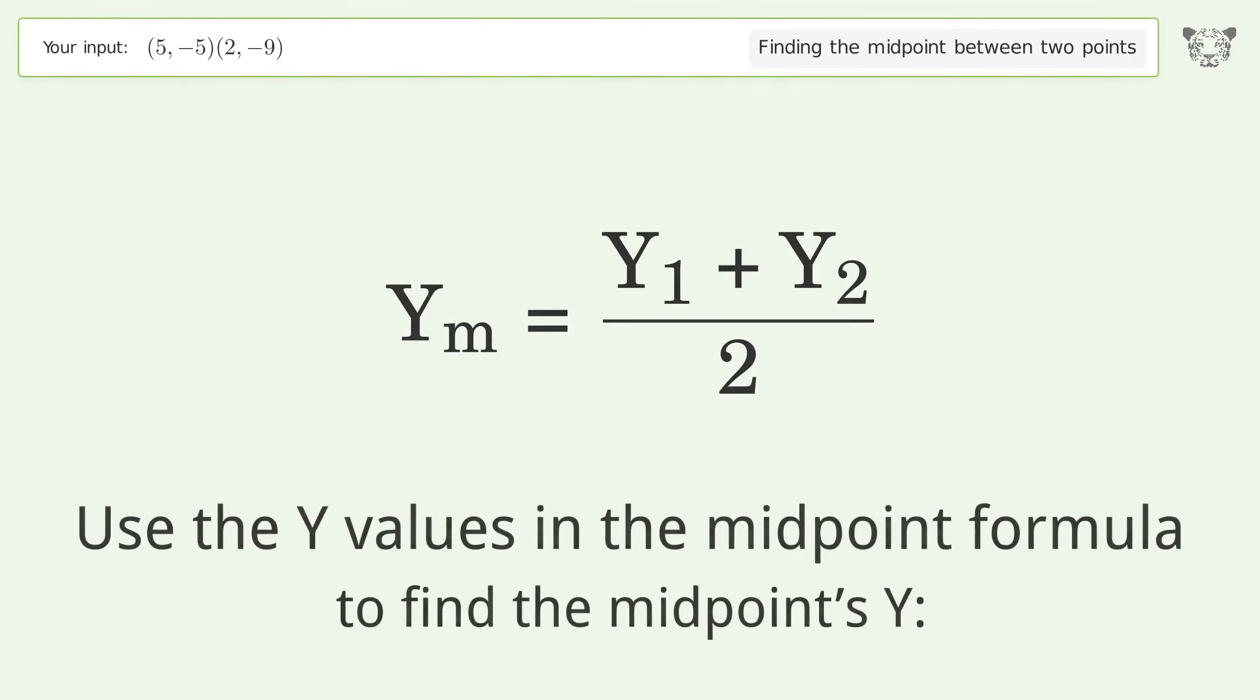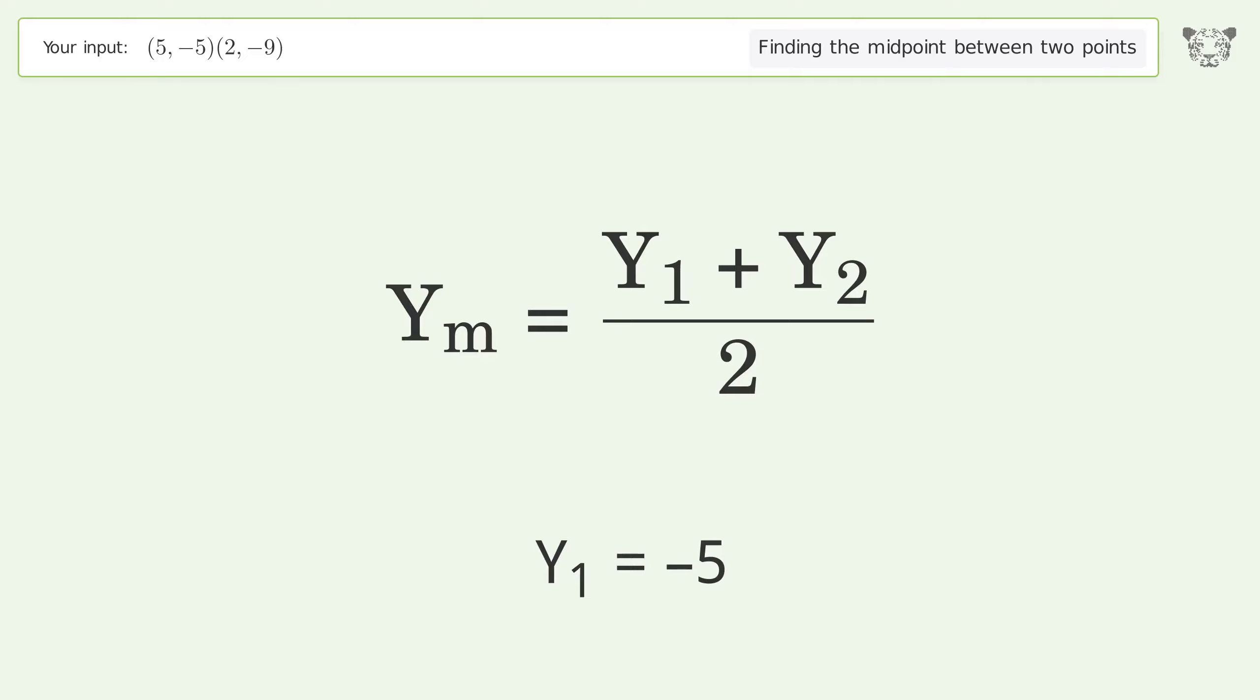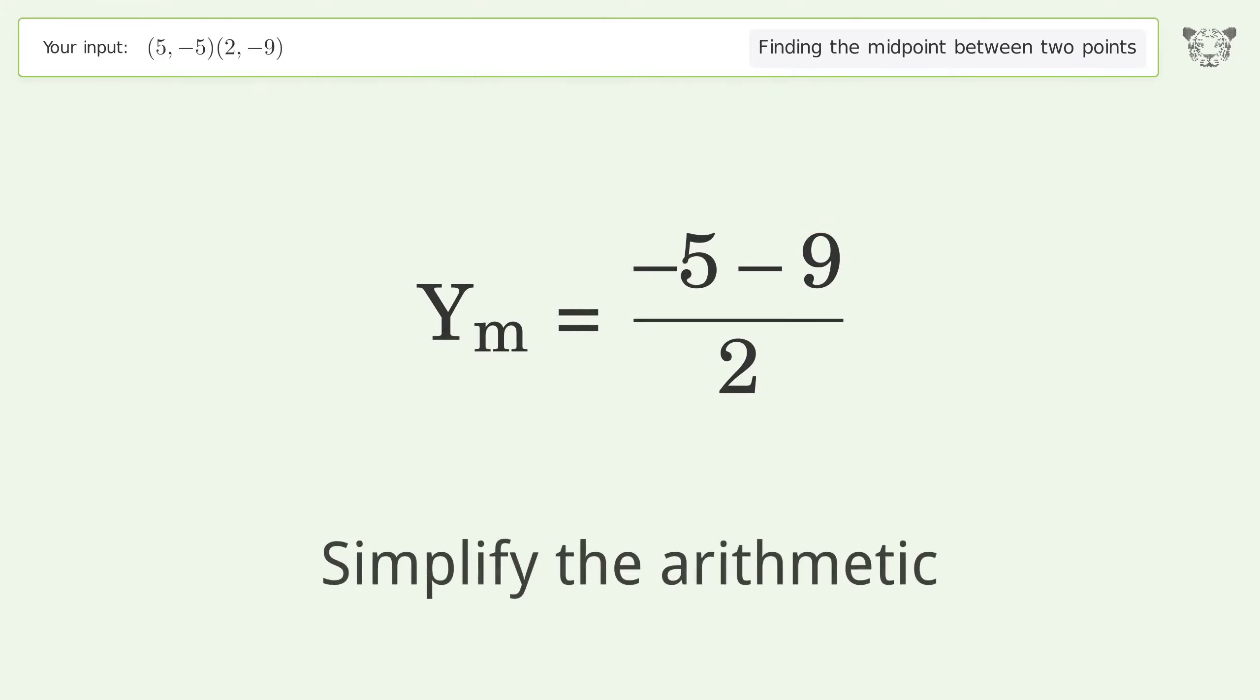Use the y values in the midpoint formula to find the midpoint's y-coordinate. y1 equals -5, y2 equals -9. Simplify the arithmetic.